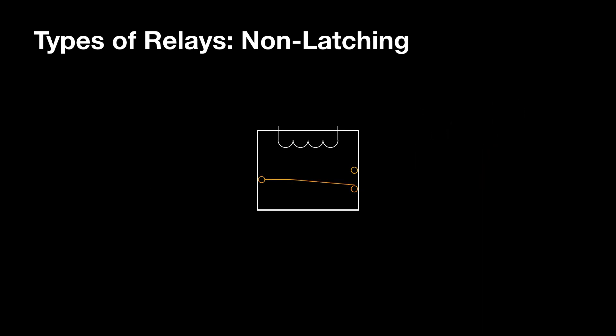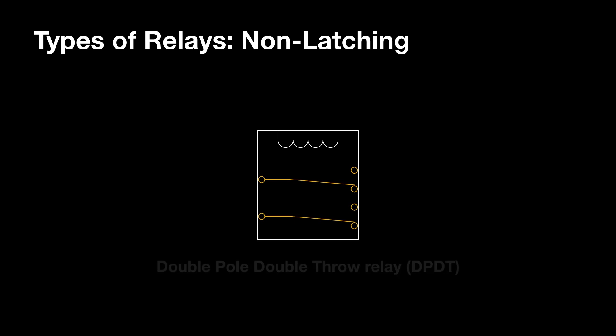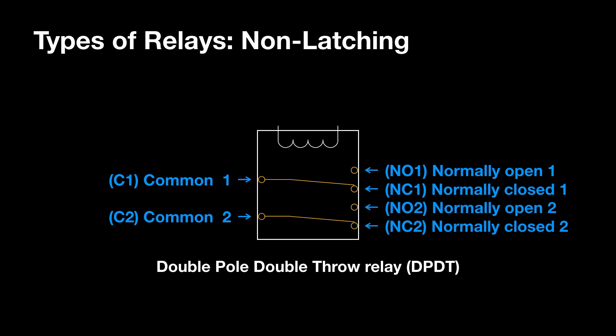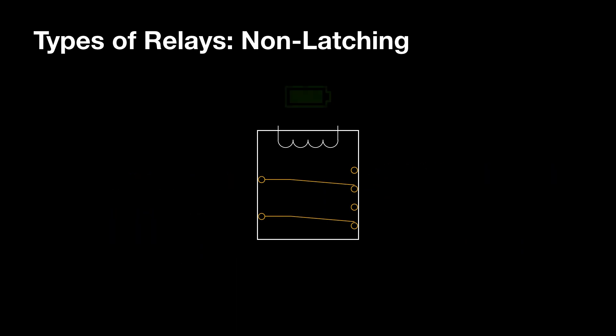We can create a double-pole, double-throw relay by adding an additional armature that is attached to the same coil. Now we have a relay that has two common terminals, each of which has a normally open and a normally closed contact. When power is connected to this relay, both armatures move simultaneously, allowing two circuits to be controlled at the same time. Even more armatures can be added to create relays with three, four, or — I've even seen some with eight poles.